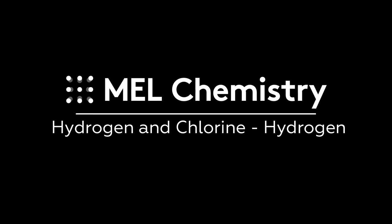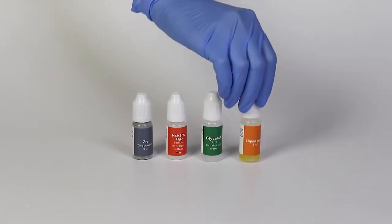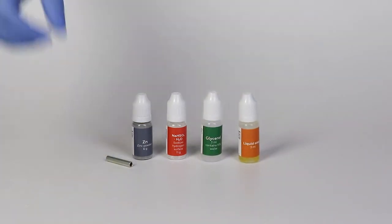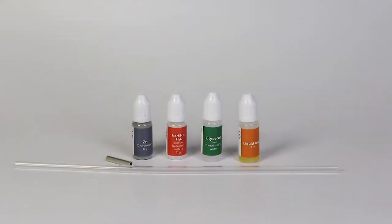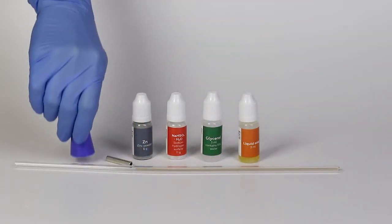For the hydrogen experiment, you'll need zinc powder, sodium hydrogen sulfate, glycerol, and liquid soap. You will also need the metal cylinder, silicone tubing, a splint, and a rubber stopper with one hole.